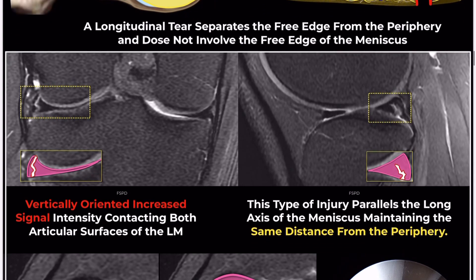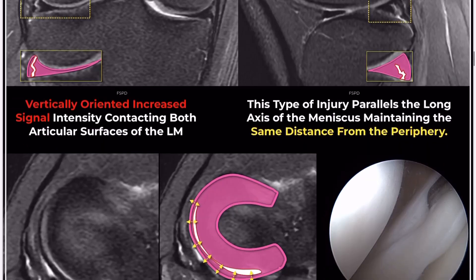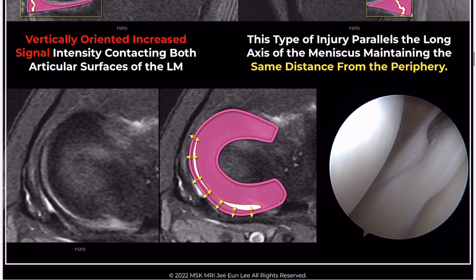On coronal images, these appear as vertically oriented increased signal intensity contacting both articular surfaces of the lateral meniscus. On axial images, this type of injury runs parallel to the meniscus's long axis, consistently maintaining the same distance from the periphery.